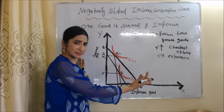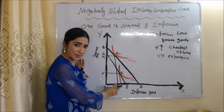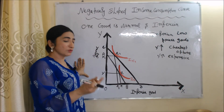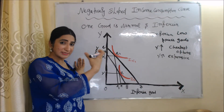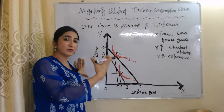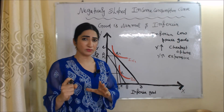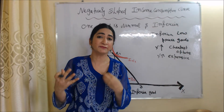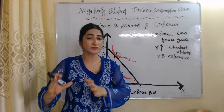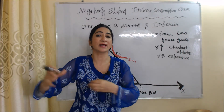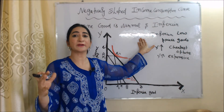You can see that as income increases, the consumer reduces the quantity of inferior goods from OX to OX1, but increases the quantity of normal good from OY to OY1. As discussed earlier, the demand for normal goods increases as income increases. On the other hand, inferior goods are those goods whose demand falls as income increases, because inferior goods are basically low-price goods.